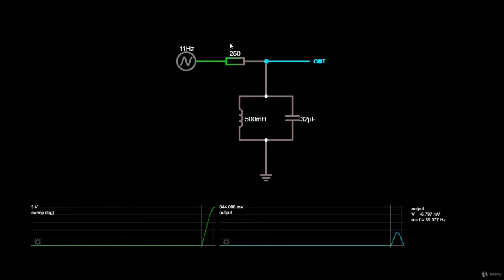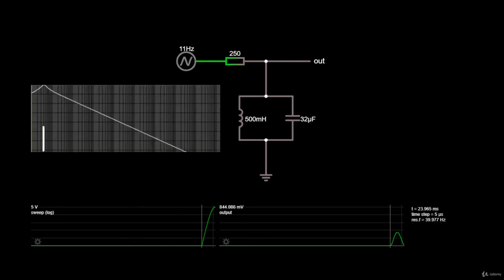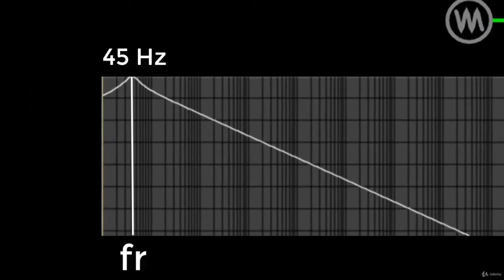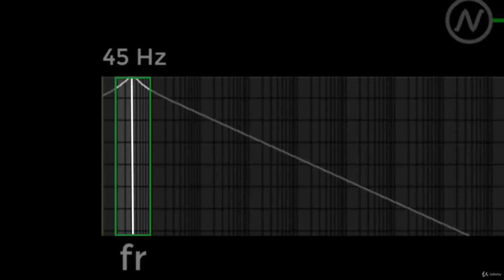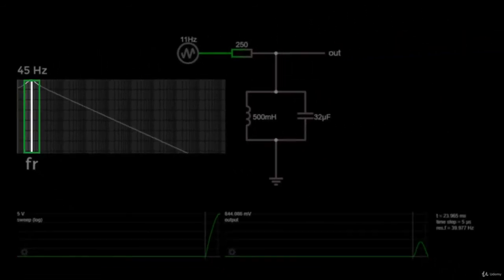Before we start the simulation, we need to know that based on the value of the components, the center frequency or the resonant frequency of this bandpass filter is 45 Hz. This means that this filter will pass a range of frequency close to the resonant frequency of the LC pair.